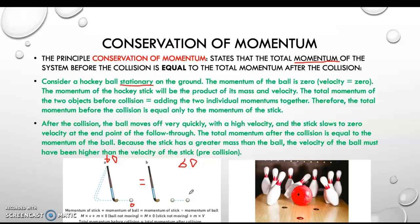If you imagine you are hitting a hockey ball — you've got a hockey stick in your hand and you hit a hockey ball — you know that you swing the stick relatively quickly, but when you hit the ball it goes way quicker than what your hockey stick was going at, and that's because of this principle. After the collision, the ball moves off very quickly with a really high velocity, and the stick slows to zero velocity at the end point of the follow-through. Because the stick has a greater mass than the ball, the velocity of the ball must have been higher than the velocity of the stick pre-collision.